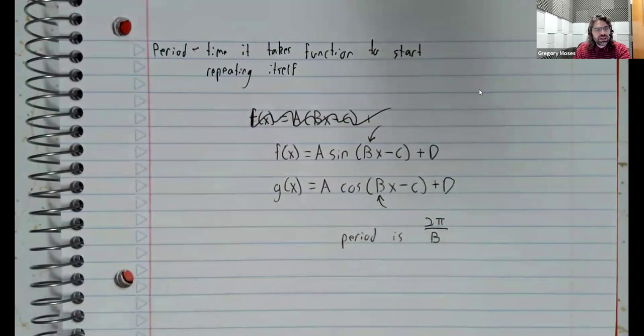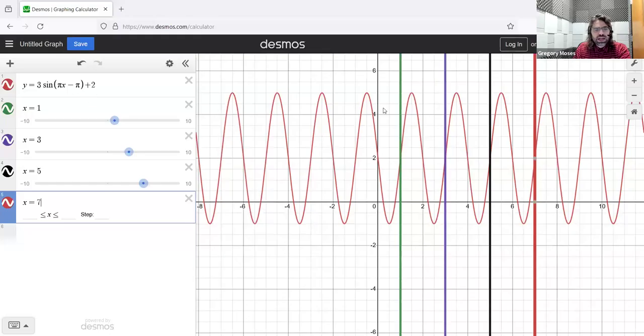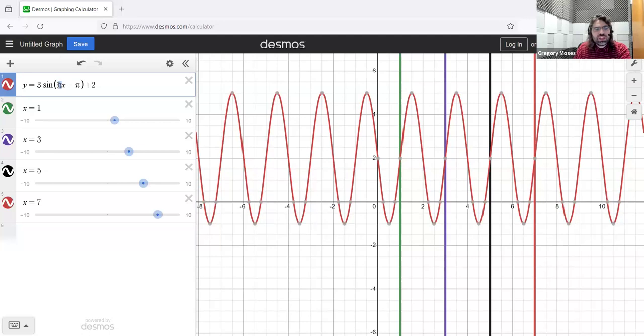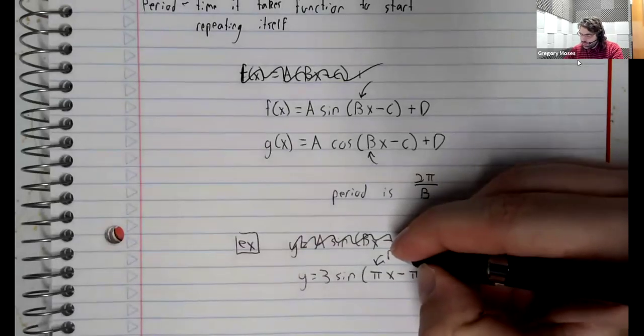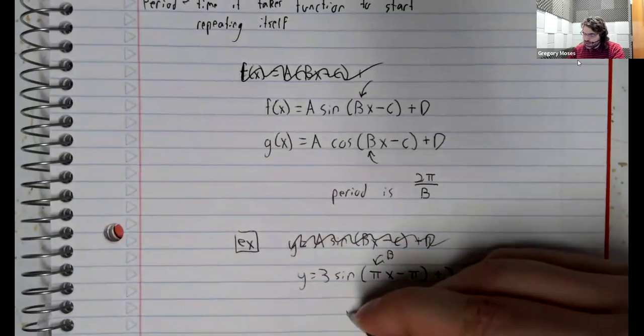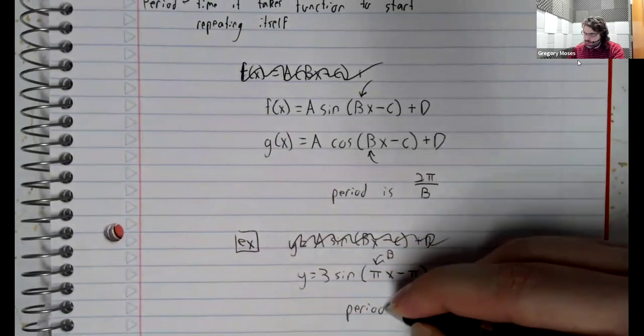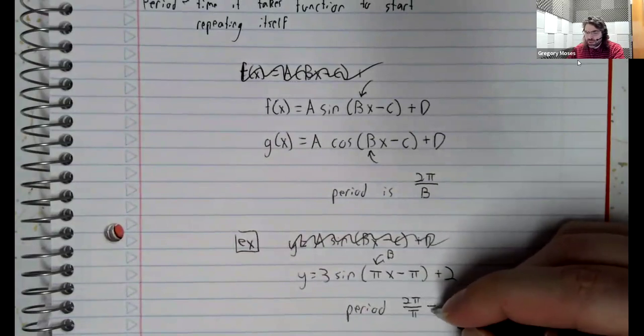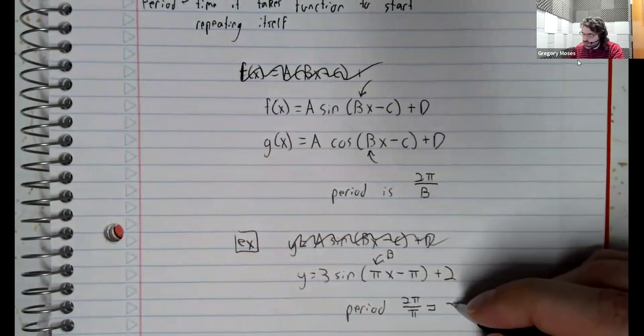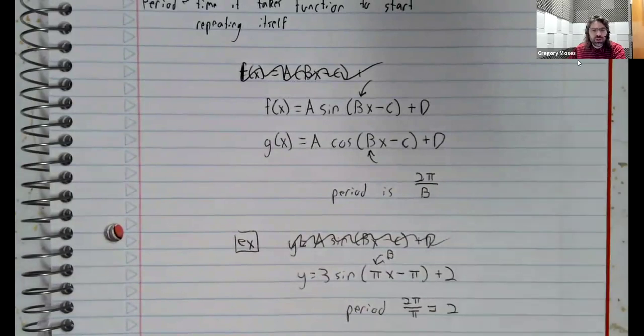So if we go back to Desmos, we looked at these graphs. It has a period of two. You see a pi in front of the x. Well, here, b is pi. So how did I know the period will be 2? Because 2 pi divided by pi, the pi's cancel. And we get 2 from this formula.